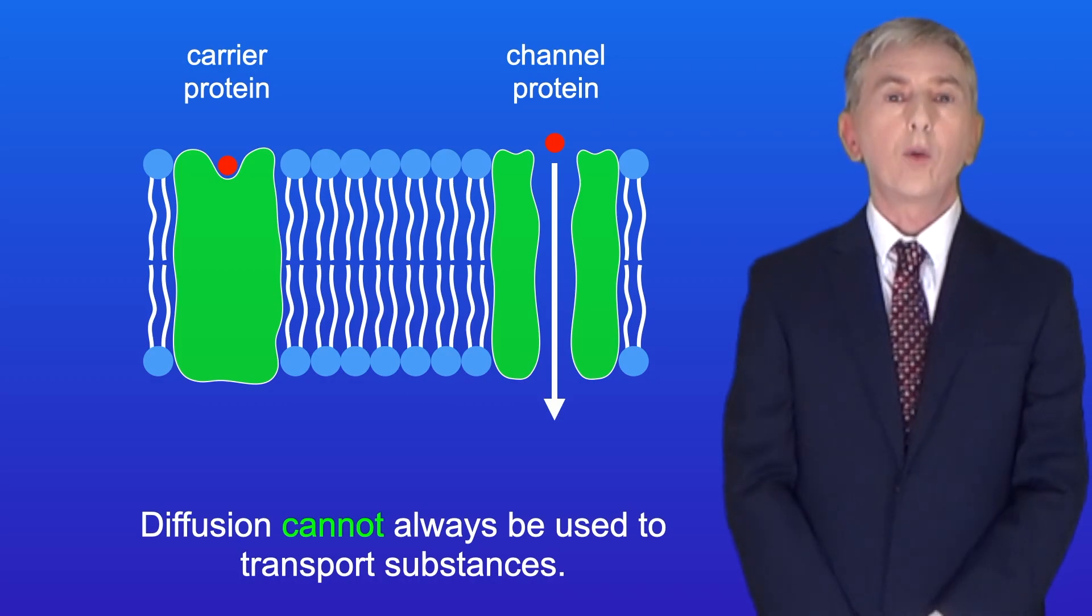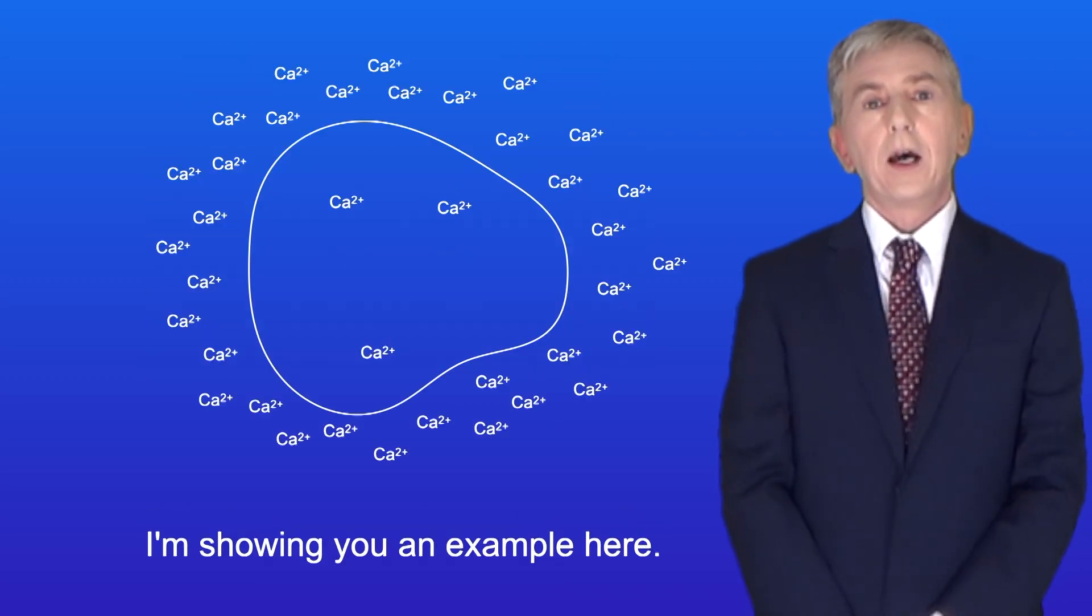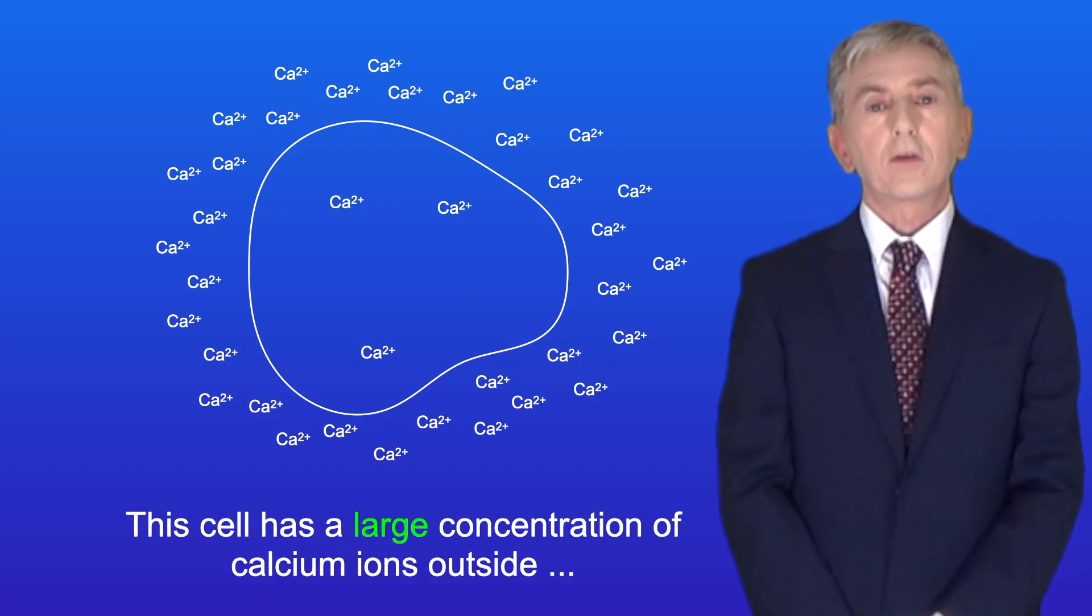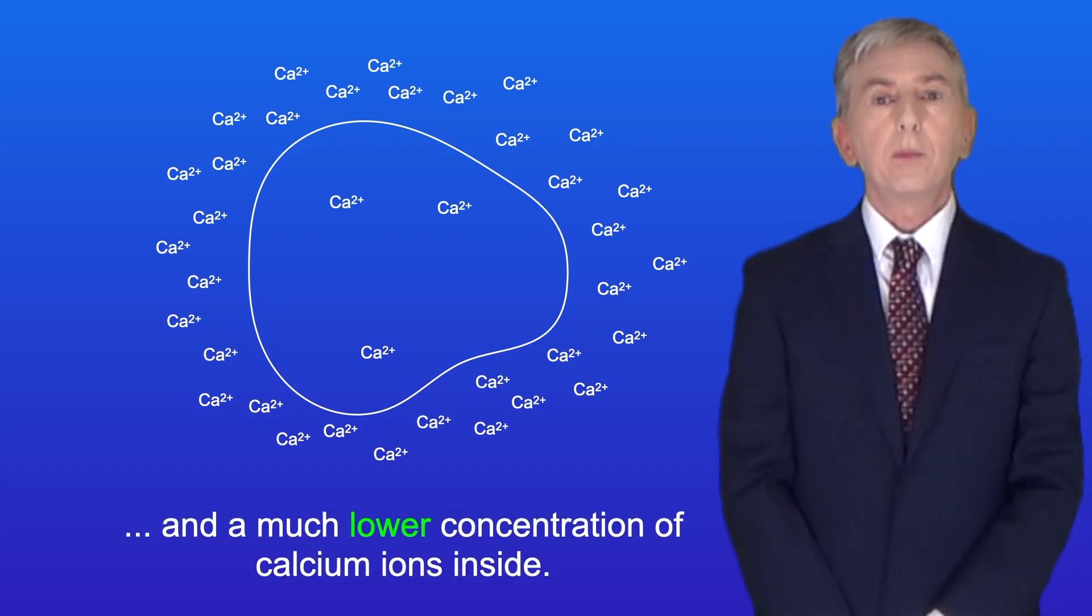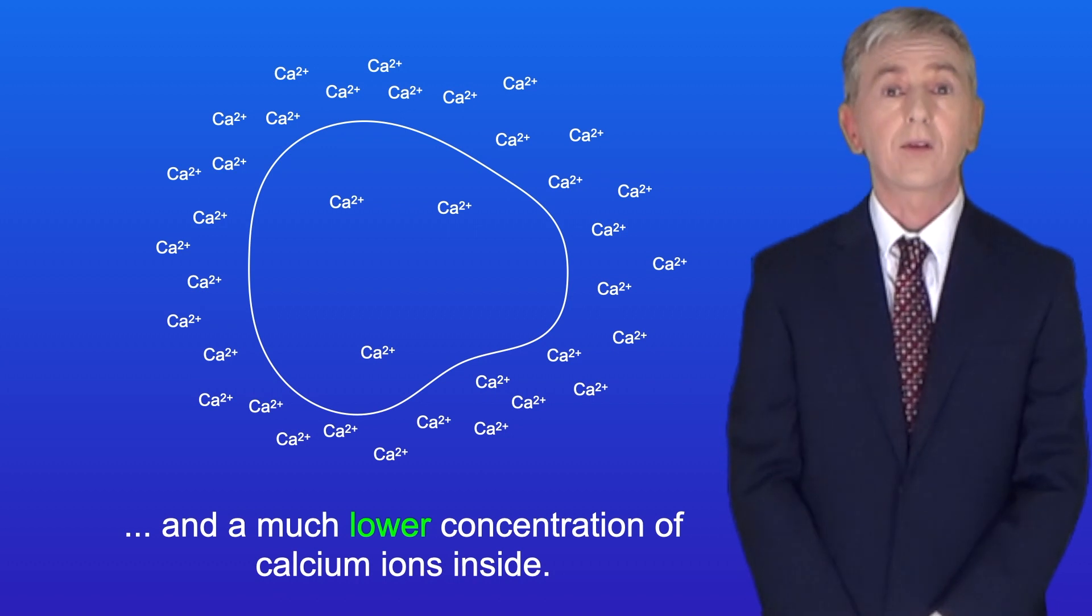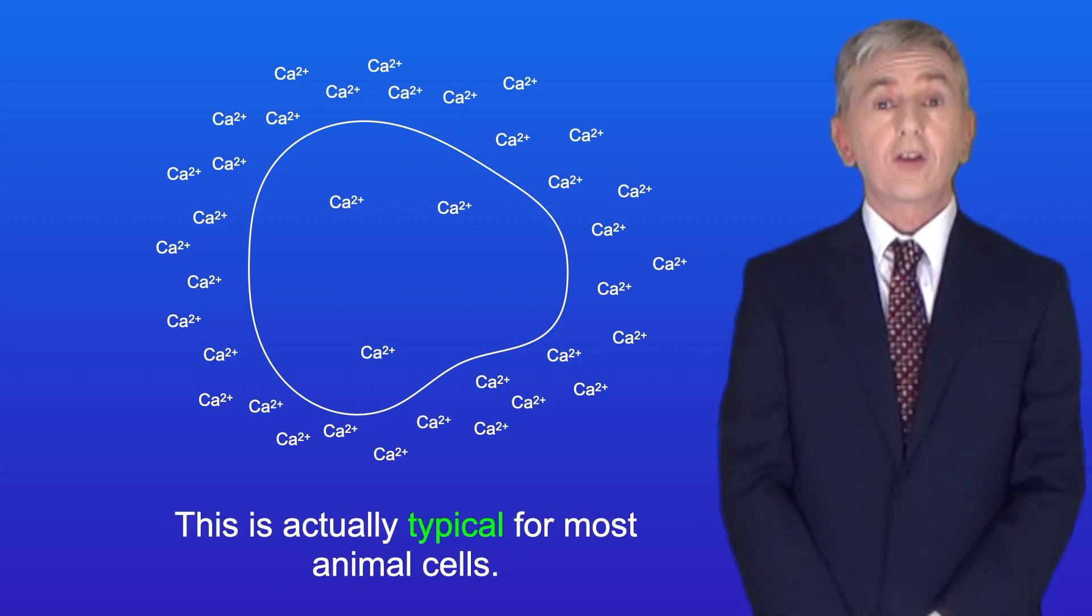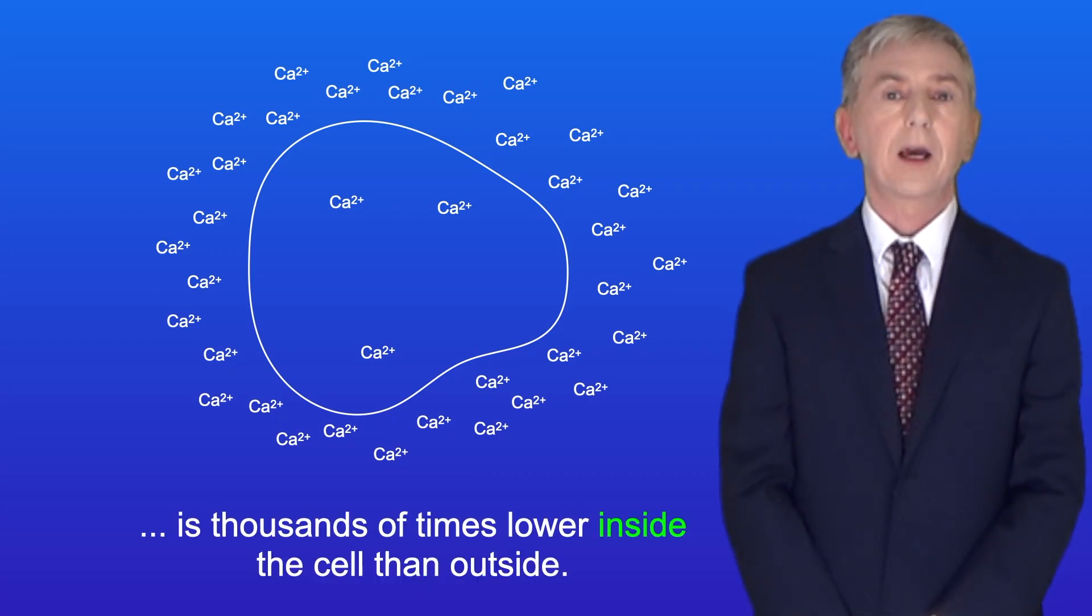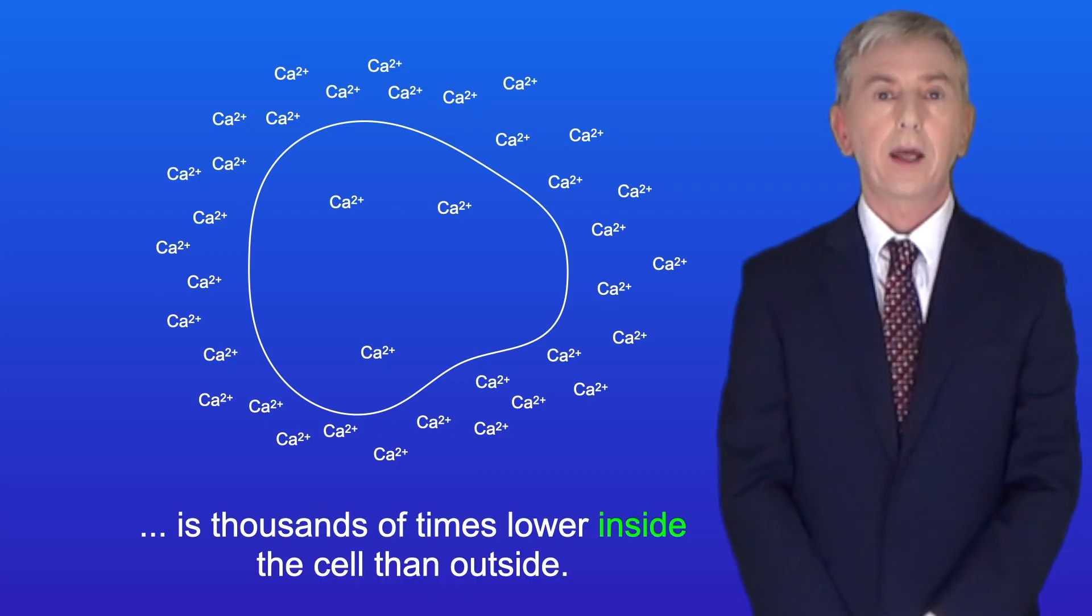Now diffusion cannot always be used to transport substances, and I'm showing an example here. This cell has a large concentration of calcium ions outside, and a much lower concentration of calcium ions inside. Now this is actually typical for most animal cells. Generally the concentration of calcium ions is thousands of times lower inside the cell than outside.